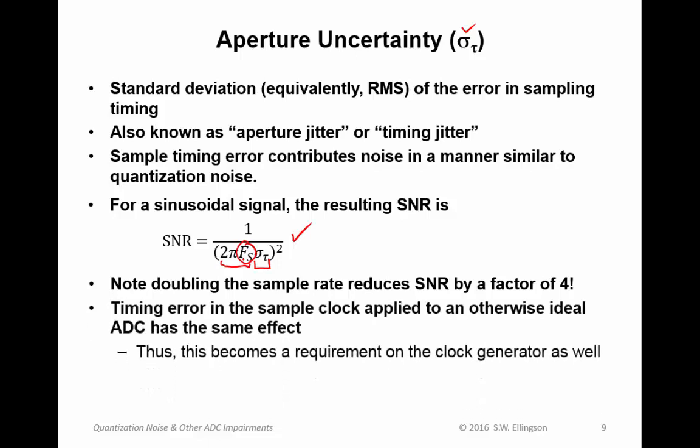Timing error in the sample clock applied to an otherwise ideal ADC has the same effect, thus a requirement on the clock generator as well. So ADCs will have an aperture uncertainty associated with them, but all that says is how uncertain the ADC is for a perfect clock. If you have a clock which itself has some error in it or some timing jitter, then that may dominate instead. In any event, the ADCs certainly can't do any better than what would be suggested by its own internal aperture uncertainty.